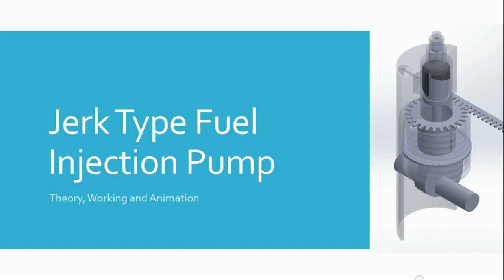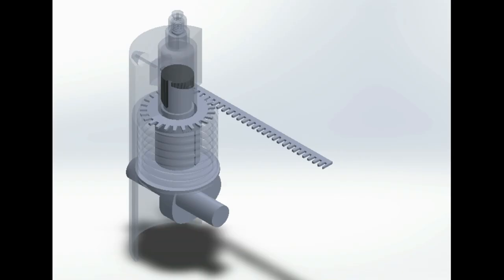The fuel injection pump delivers accurately metered quantity of fuel under high pressure. A jerk type injection pump consists of a reciprocating plunger driven by a camshaft.